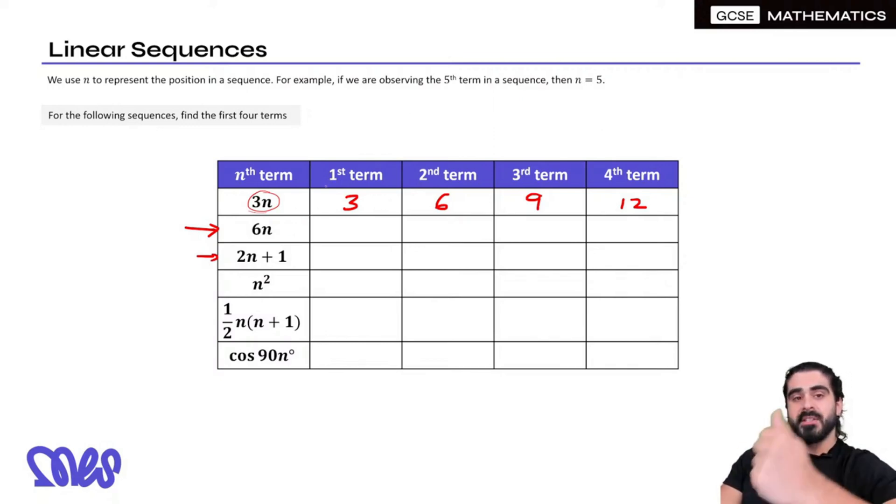The second one, the first term, N would be 1, 6 times 1 is 6. The second term, N is 2, 6 times 2 is 12. Third term, N is 3, 6 times 3 is 18. We're going to discover the patterns as well with some of these N terms. The fourth term, N is 4, 6 times 4 is 24.